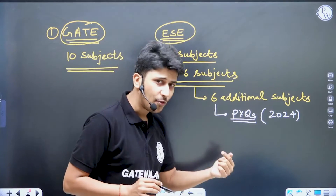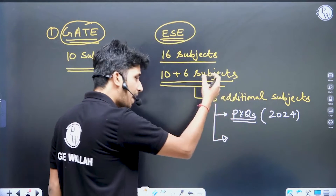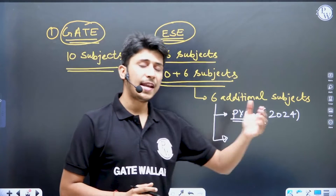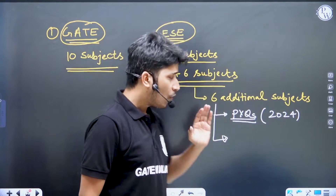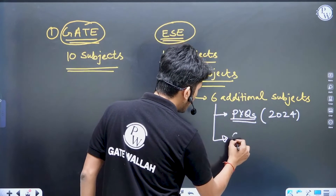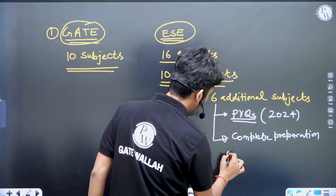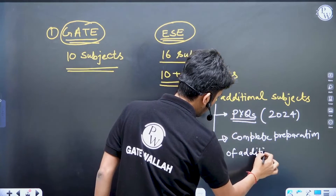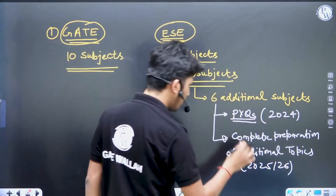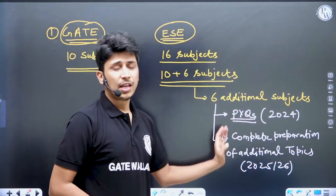If you are preparing for ESC 2025-2026 along with your GATE preparation, you have to read these 6 additional subjects in full. In all our paid courses — whether it is the RACE batch, GATE plus ESC batch, or any type — we cover the additional subjects of ESC. You have ample time, so add these 6 additional subjects, their theories, their numericals, and your ESC preparation will be complete.